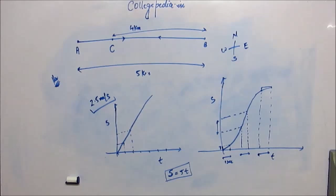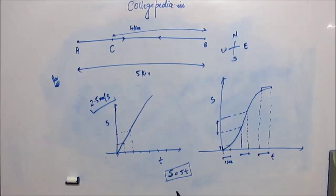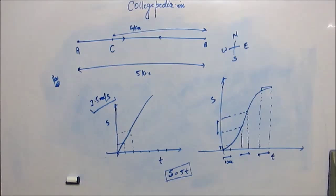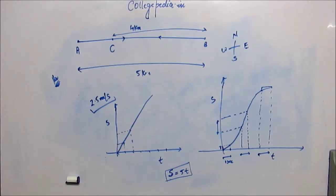In the first second of the journey, to calculate that, you calculate what was the distance at t = 0, and you find out what was the distance when t = 1 second. That difference is actually the distance that has been travelled from 0 to 1 second. Similarly, you can find the distance travelled from t = 2 seconds to t = 3 seconds.